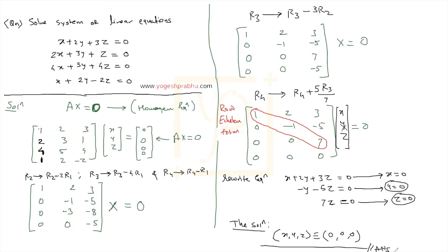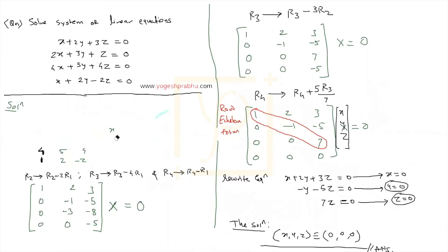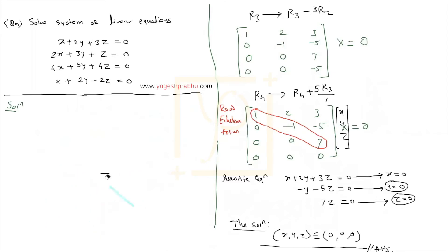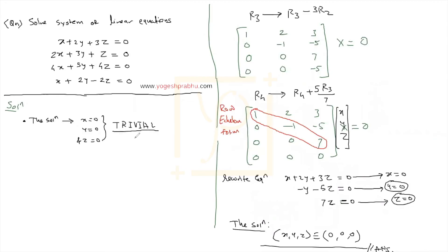Now let's look at the answer and make some important observations. The solution is x equals 0, y equals 0, z equals 0 — all values are zero. A solution where all values are zero is not very significant or useful, so we call this a trivial solution. Trivial means not very significant, and this happens when all variables equal zero.